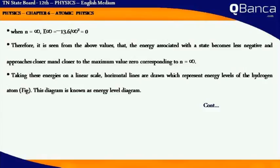E_infinity = -13.6/∞² = 0. Therefore, it is seen from the above values that the energy associated with a state becomes less negative and approaches closer to the maximum value 0 corresponding to n = infinity. Taking these energies on a linear scale, horizontal lines are drawn which represent the energy levels of the hydrogen atom. This diagram is known as energy level diagram.